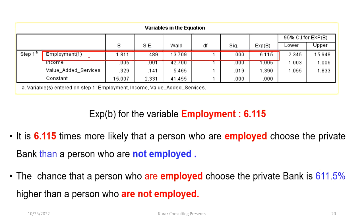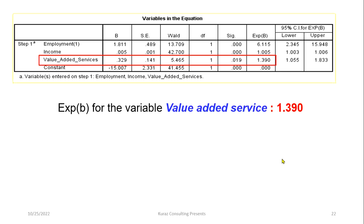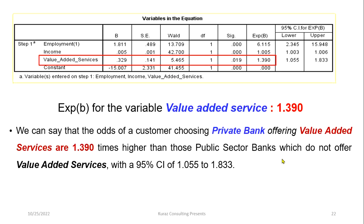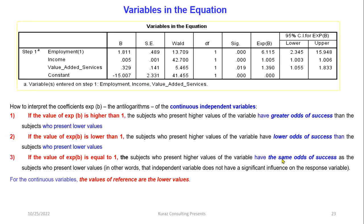The odds ratio for value-added service is 1.39, meaning the odds of a customer choosing a private bank offering value-added services are 1.39 times higher than for public sector banks which do not offer value-added services. For a continuous variable: if the odds ratio is greater than 1, subjects with higher values have greater odds of success than those with lower values; if less than 1, subjects with higher values have lower odds of success; if equal to 1, the independent variable has no significant influence on the response.